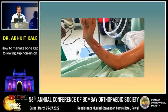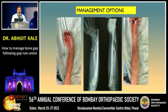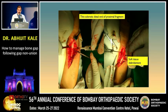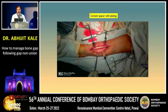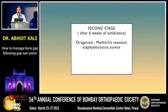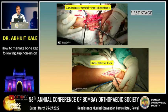An incision was made over the radius, the bones were debrided until good bleeding edges were obtained, and the defect was filled with cement, followed by plating. At this stage, the length of the radius had not yet been fully restored.